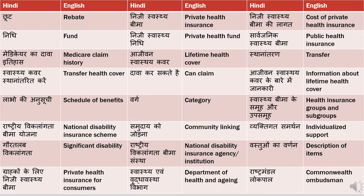'Samudai ko jodna' means community linking — 'samudai' is community. 'Vyaktigat samarthan' means individualized support — 'vyaktigat' is individual and 'samarthan' is support. 'Gaur talab viklaangta' means significant disability — 'gaur talab' is significant and 'viklaangta' is disability.